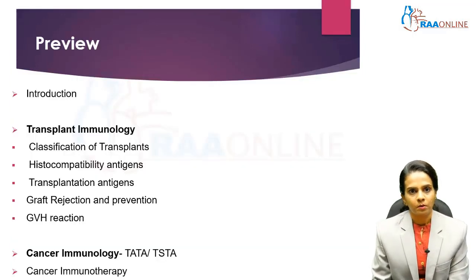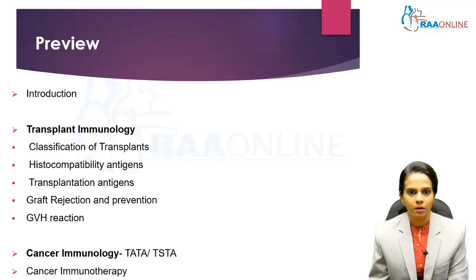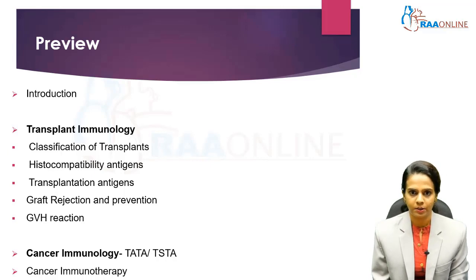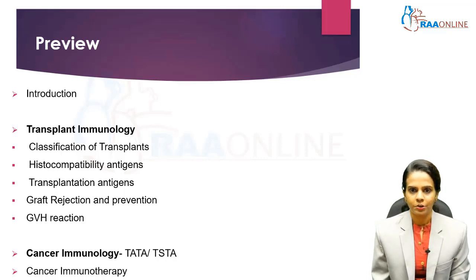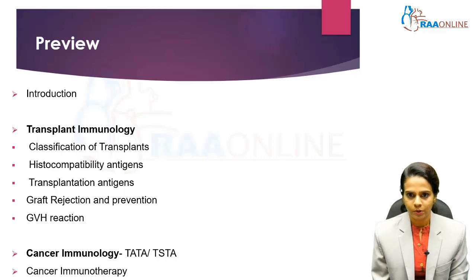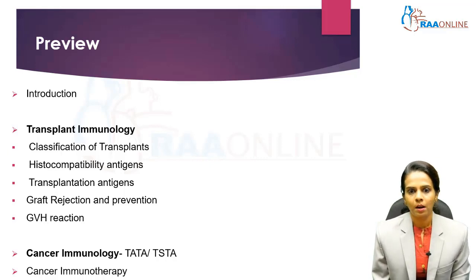Chapter preview: first it will cover an introduction about transplant and cancer immunology, followed by detailed explanation of transplant immunology and cancer immunology. Transplant immunology includes classification of transplants, types of grafts, histocompatibility antigens, transplantation antigens, graft rejection and prevention, and graft versus host reaction. In cancer immunology, I will cover TATA and TSTA — tumor associated transplantation antigen and tumor specific transplantation antigen — and finally cancer immunotherapy.